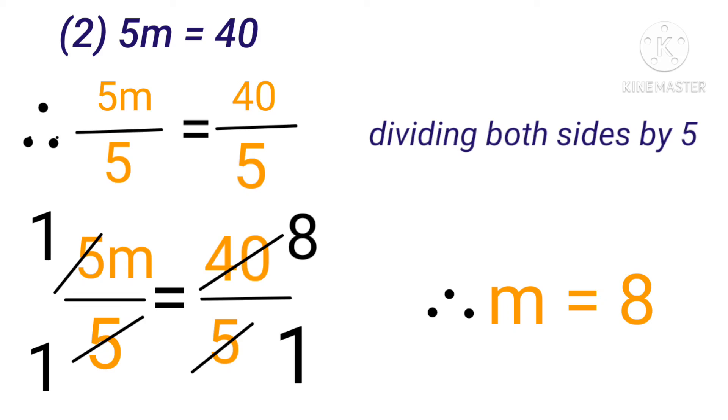5m equals 40. In this example, 5m means 5 multiplied by m. If we divide both sides of the equation by 5, then we will get the value of m.